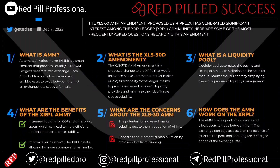An Automated Market Maker is a smart contract that provides liquidity in the XRPL's decentralized exchange. Each AMM holds a pool of two assets and enables users to swap between them at an exchange rate set by a formula. What is the XLS-30D amendment? The XLS-30D AMM amendment is a proposed change to the XRPL that would introduce native AMM functionality.